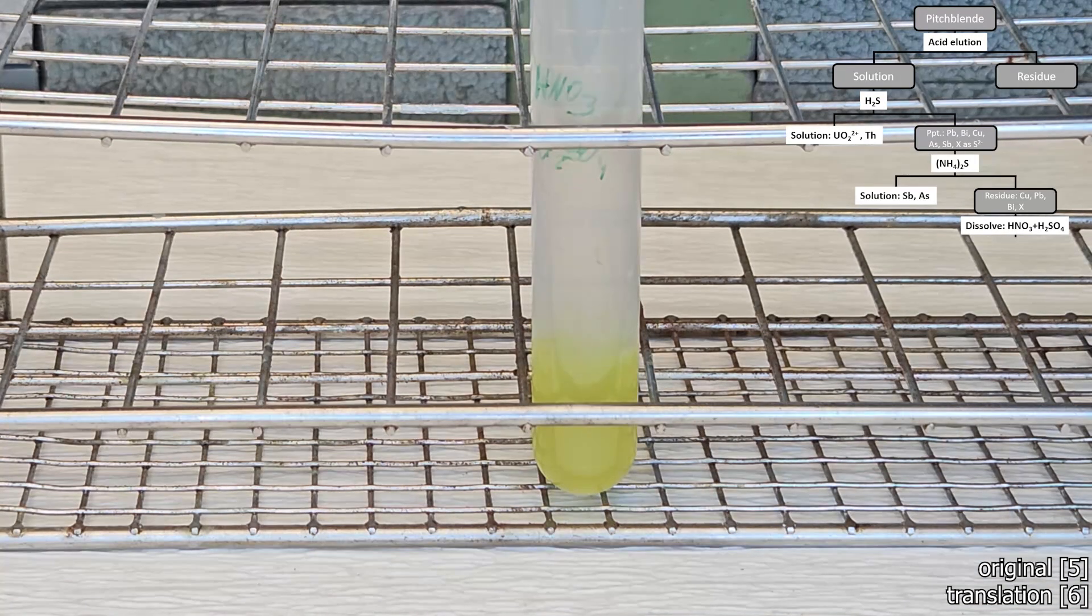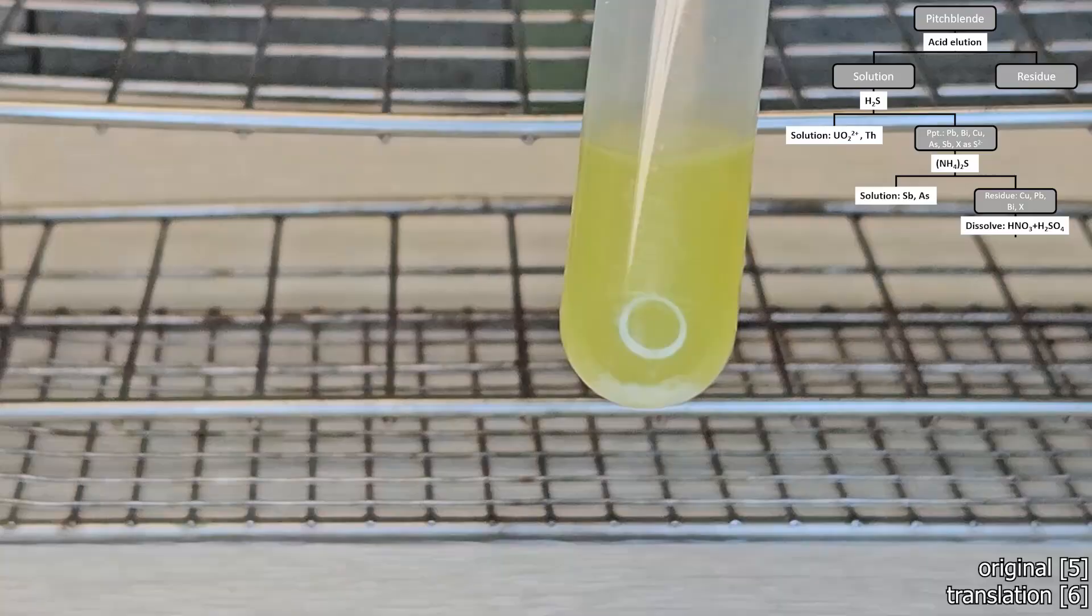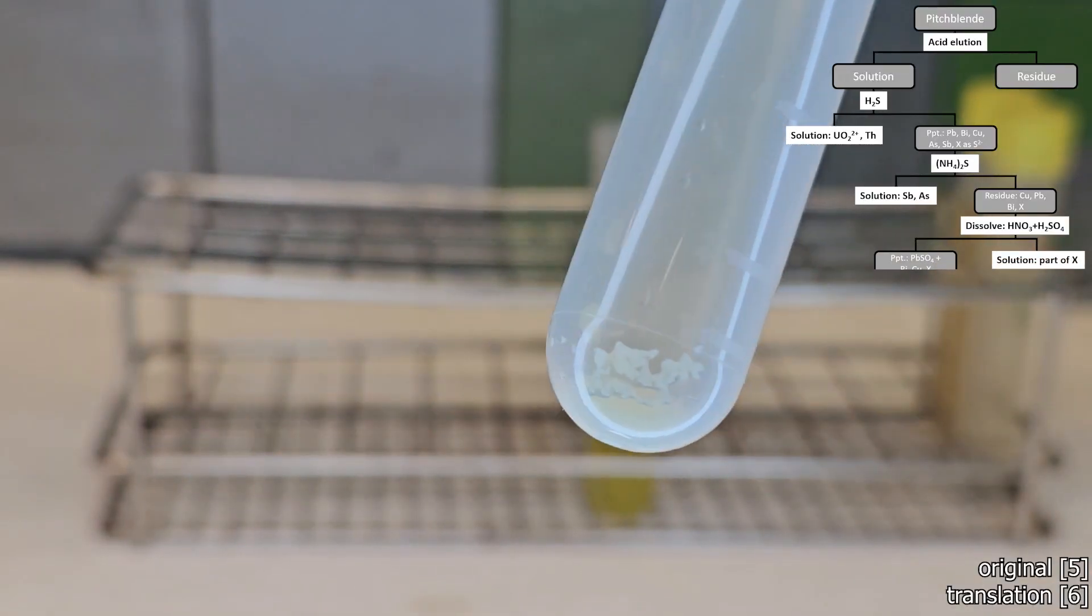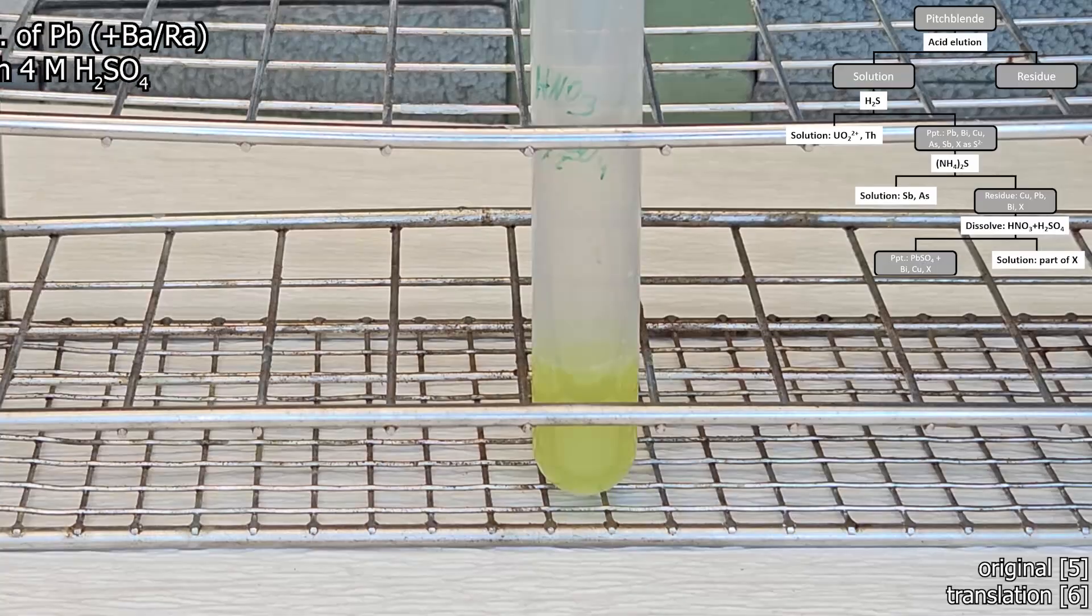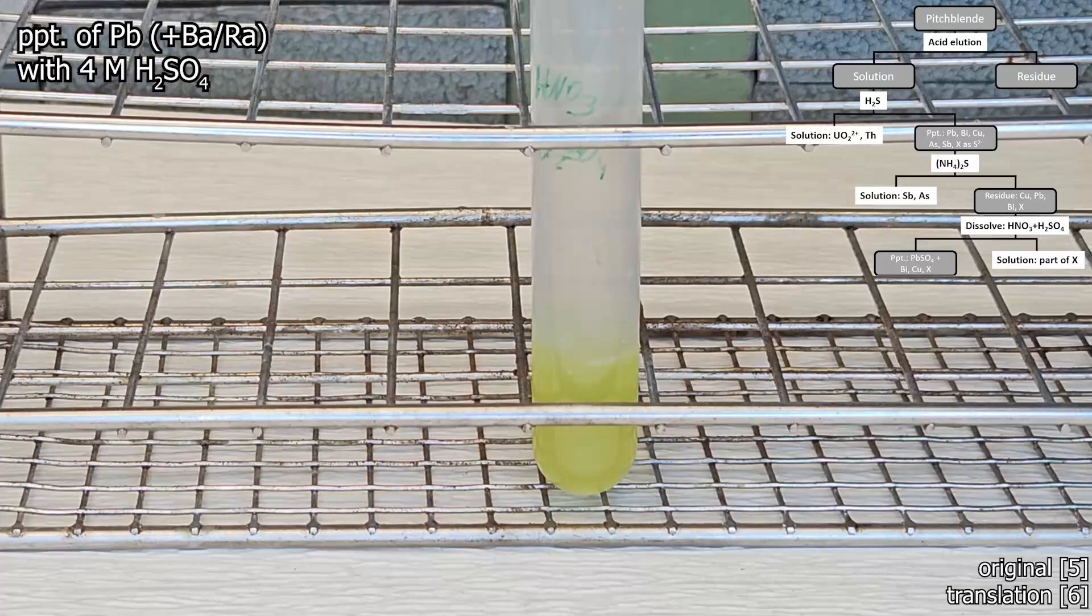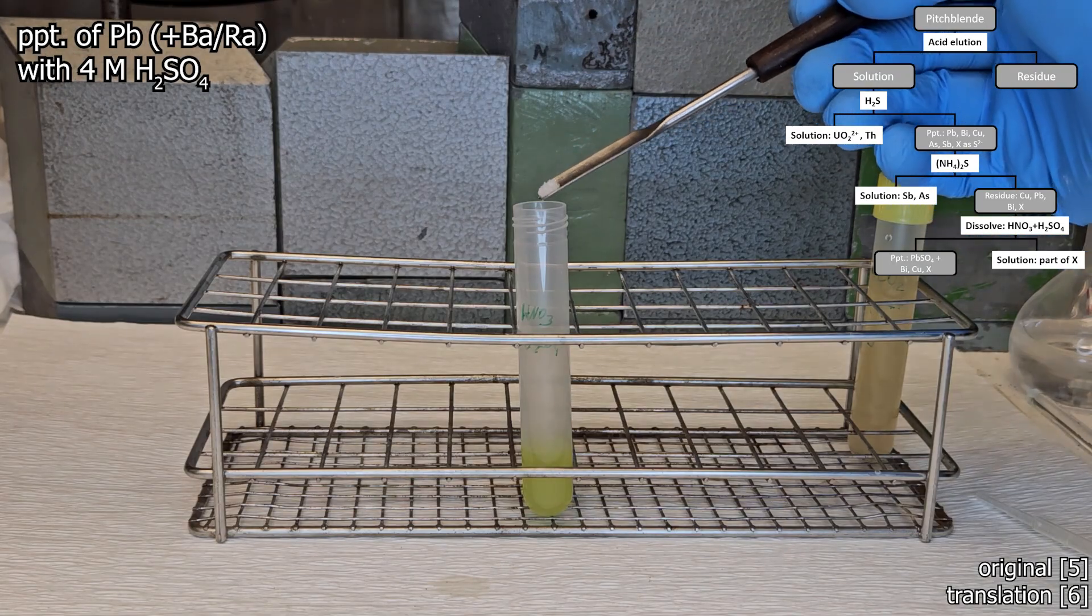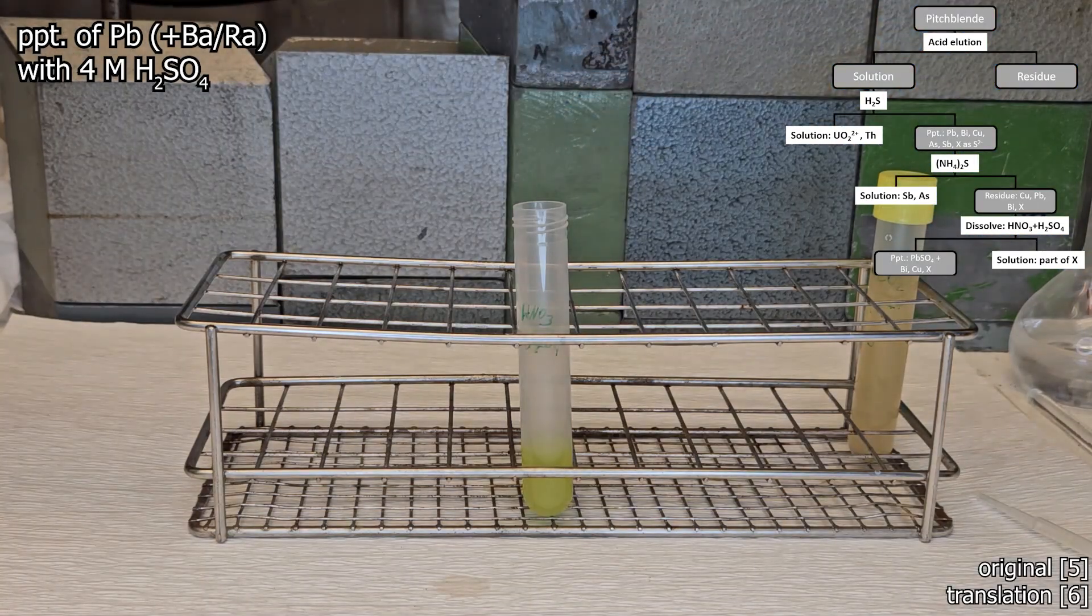The somewhat clear solution contains the dissolved polonium and is mixed with 4 molar sulfuric acid, primarily to precipitate out the lead carrier. The first sulfate precipitate is the mass from which Curie later extracted the radium, as radium and barium also precipitate out here.